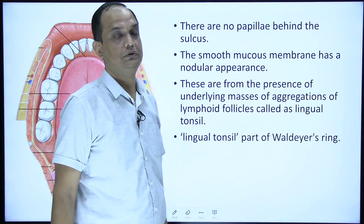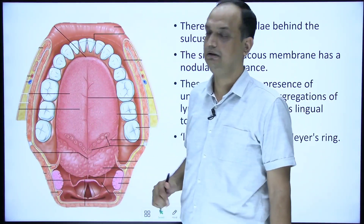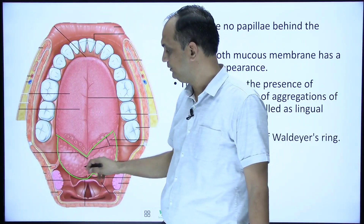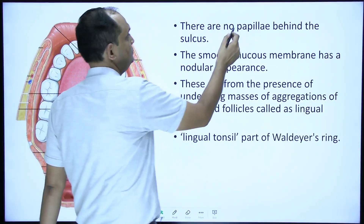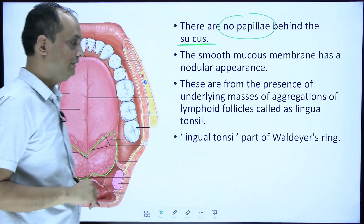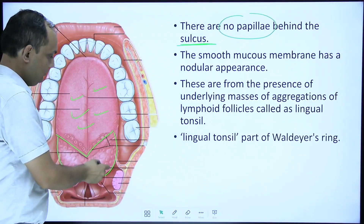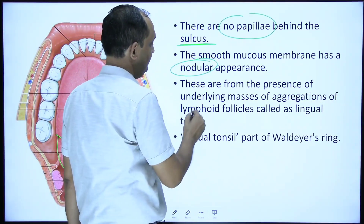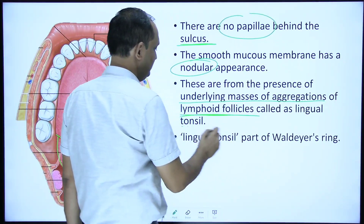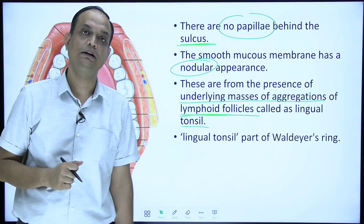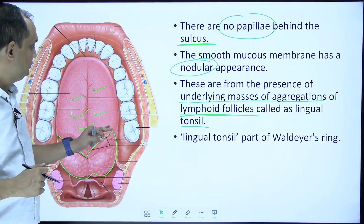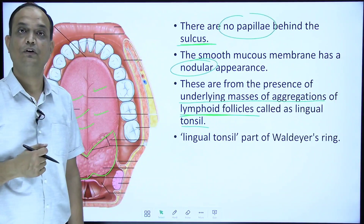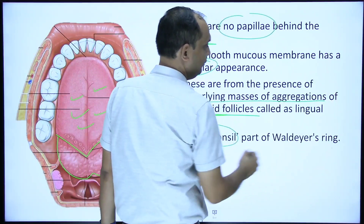An important point: behind the sulcus you have the posterior one-third of the tongue, and in this posterior part of the tongue there are no papillae. All papillae are present in the anterior two-thirds of the tongue but not in the posterior one-third. The posterior one-third of the tongue is rough and nodular in appearance because of the underlying mass of aggregation of lymphoid follicles known as lingual tonsil, which forms part of Waldeyer's ring.